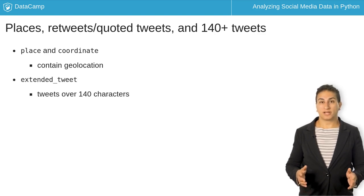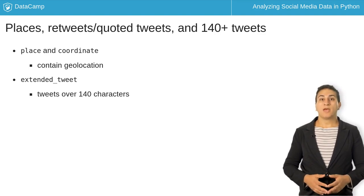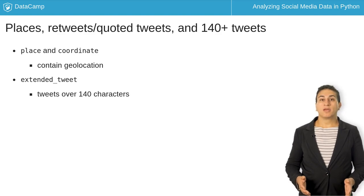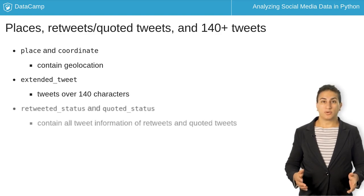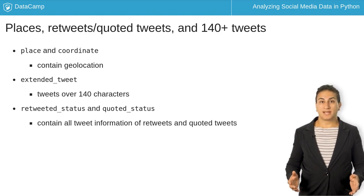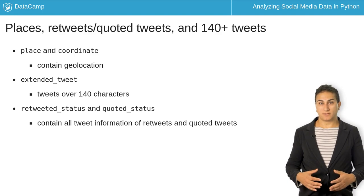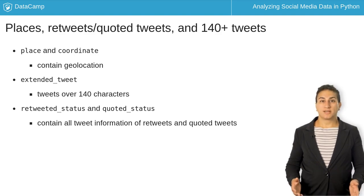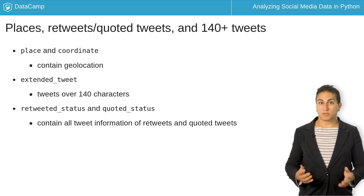Extended_tweet contains the full text of a tweet which is over 140 characters in length. When a tweet is a retweet or contains a quoted tweet, the whole of that tweet will be contained within the Twitter JSON. For retweets, that tweet will be stored in retweeted_status, and for a quoted tweet, in quoted_status.